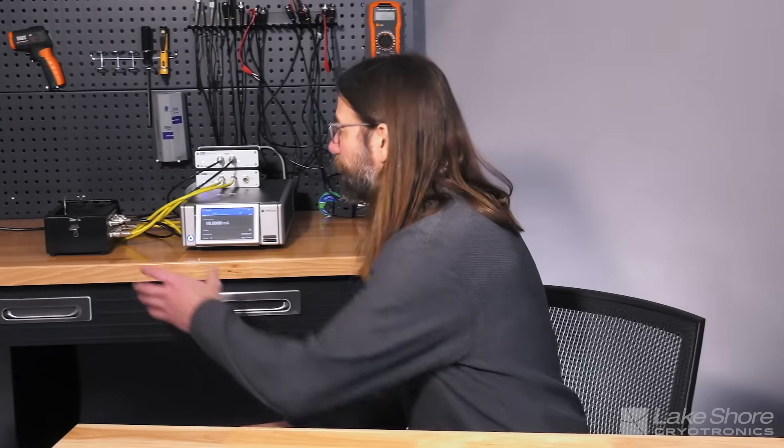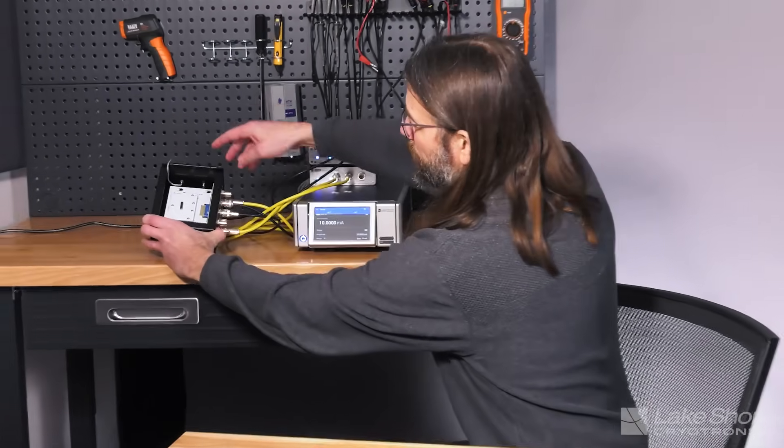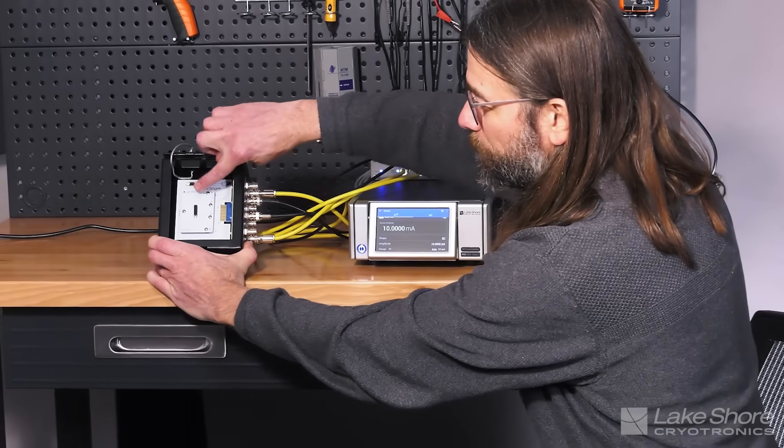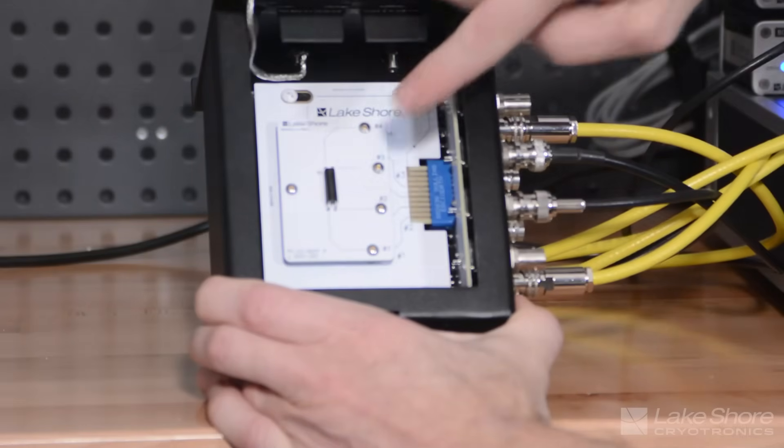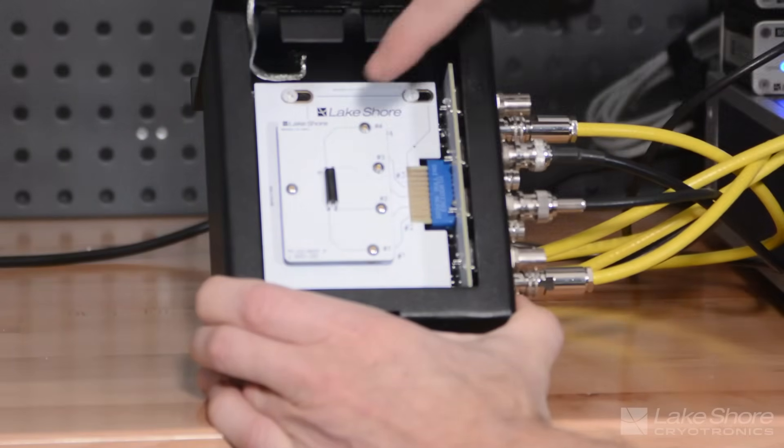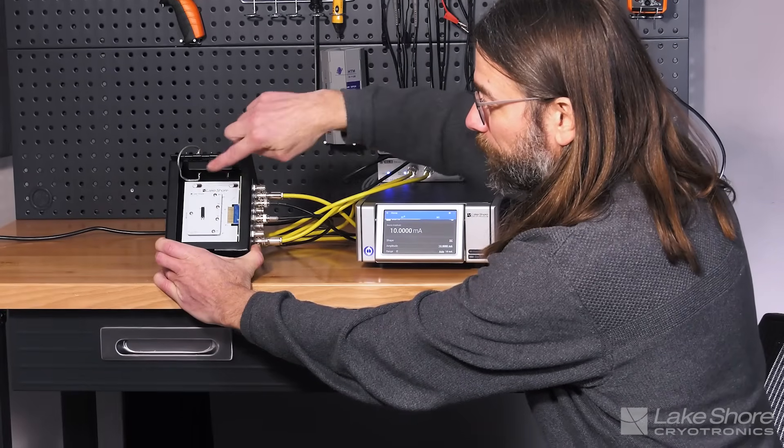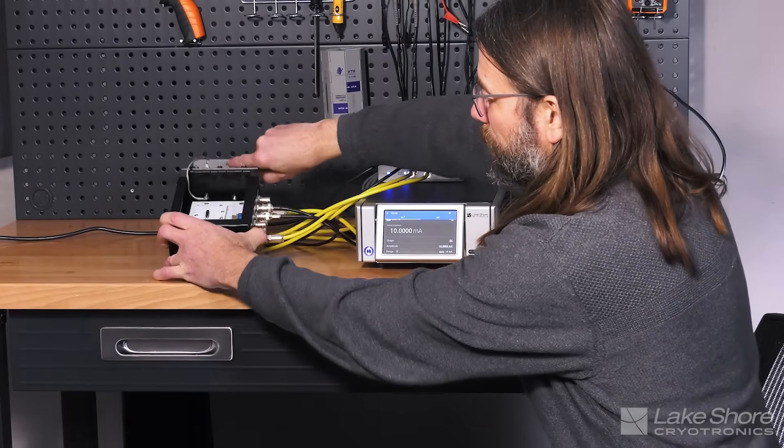All right, so let's take a look at what we have set up on the workbench. We've got our demo test fixture. So this is a 10 milliohm resistor. You may notice that it has four leads, and I'll explain those in a minute, but basically a 10 milliohm resistor in this nice test fixture.